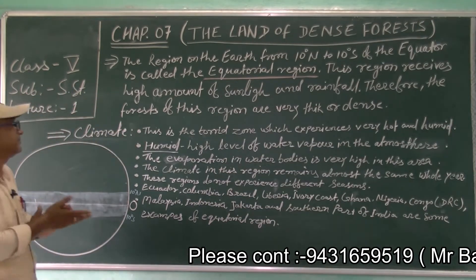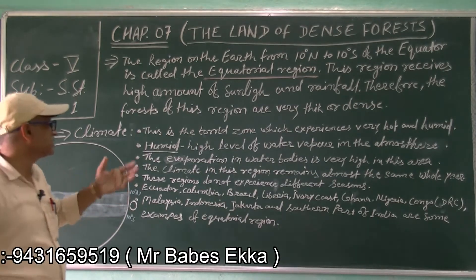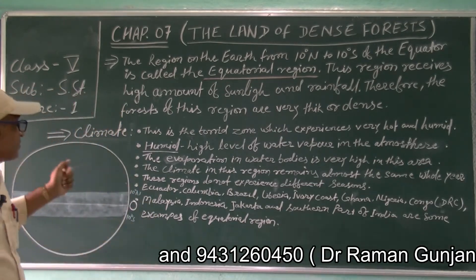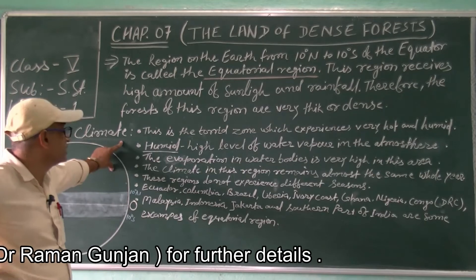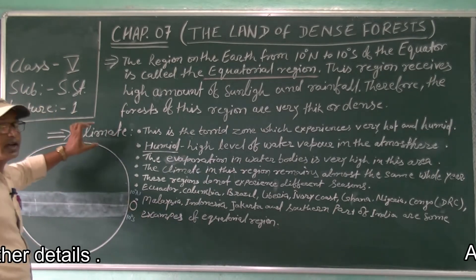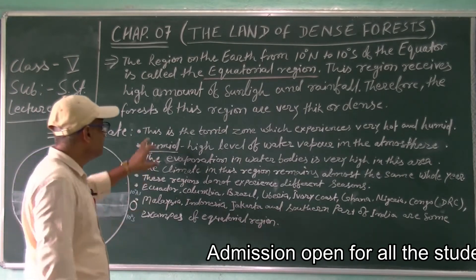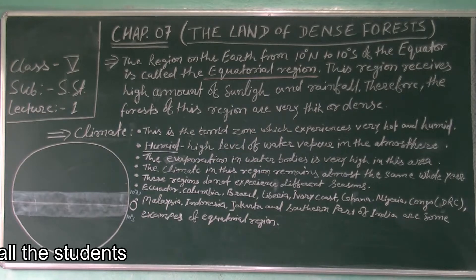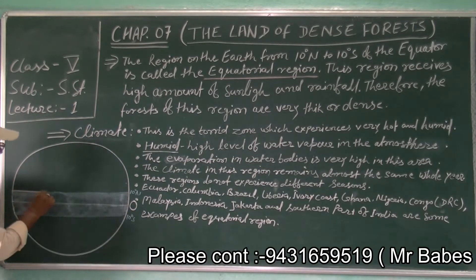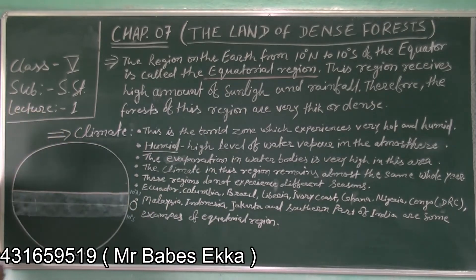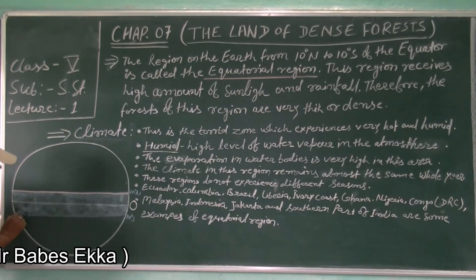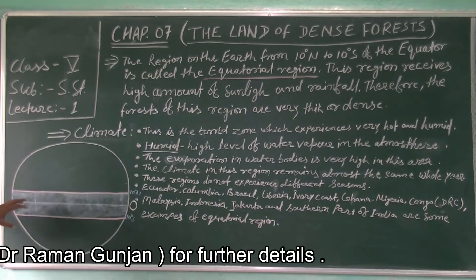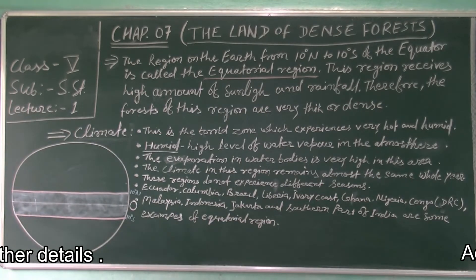Now, why are dense forests found here? What are the climatic conditions or favorable conditions? The first topic is climate. This region, from 10 degree north to 10 degree south, is called the torrid zone, also known as the equatorial or torrid zone.